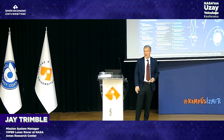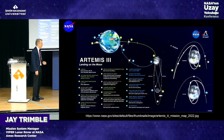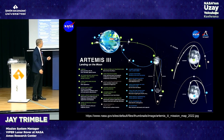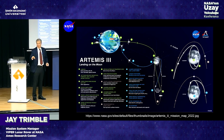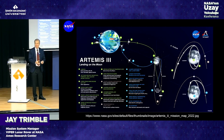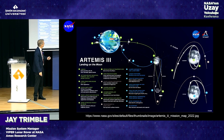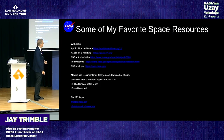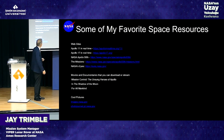Jay wrapped up by summarizing the Artemis mission sequence — launching from Earth, entering lunar orbit, the SpaceX human landing system picking up astronauts and taking them to the surface to explore, then returning to Earth. He shared links to space resources, documentaries, and imagery available on the web, and opened the floor for questions.